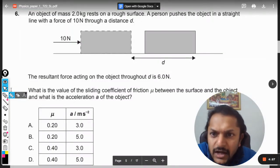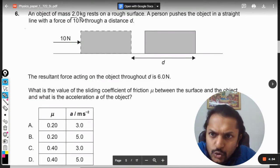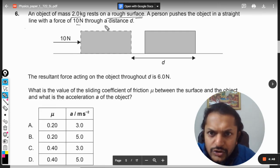Okay dear students, let us see how to do this question. An object of mass 2 kg rests on a rough surface. A person pushes the object in a straight line with a force of 10 Newton through a distance d.